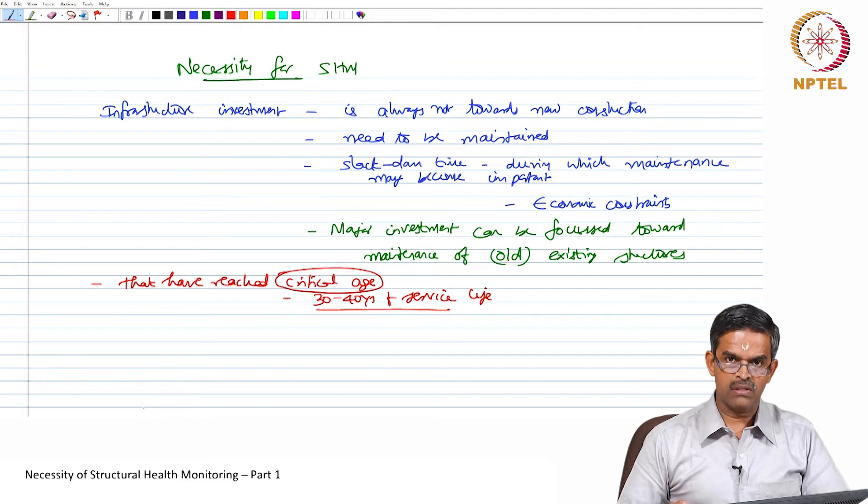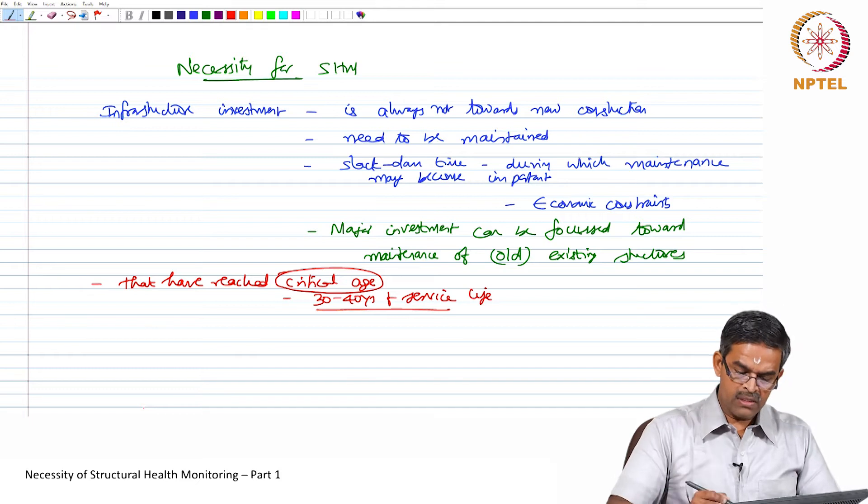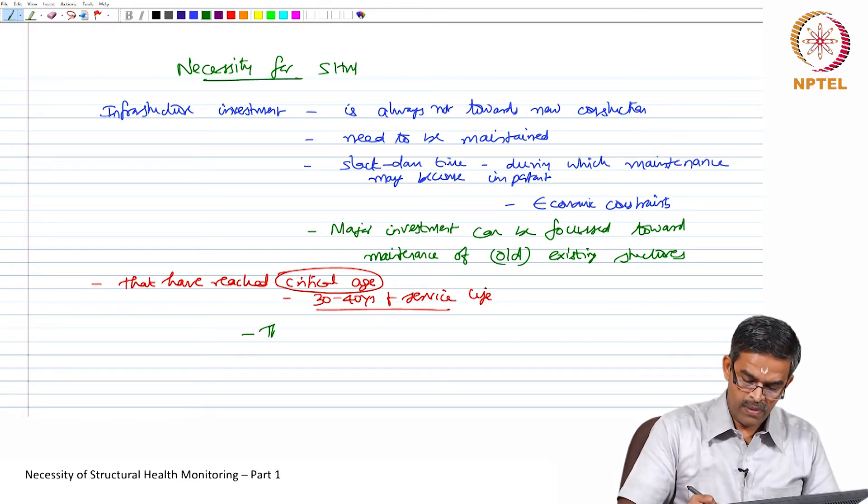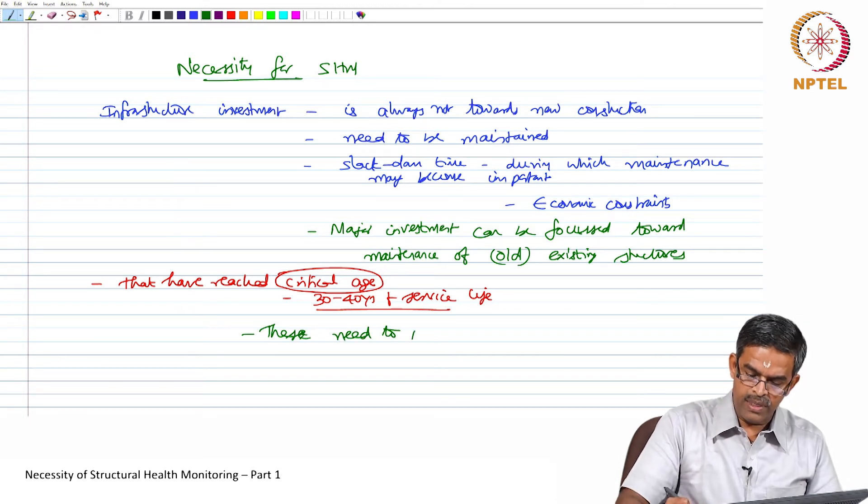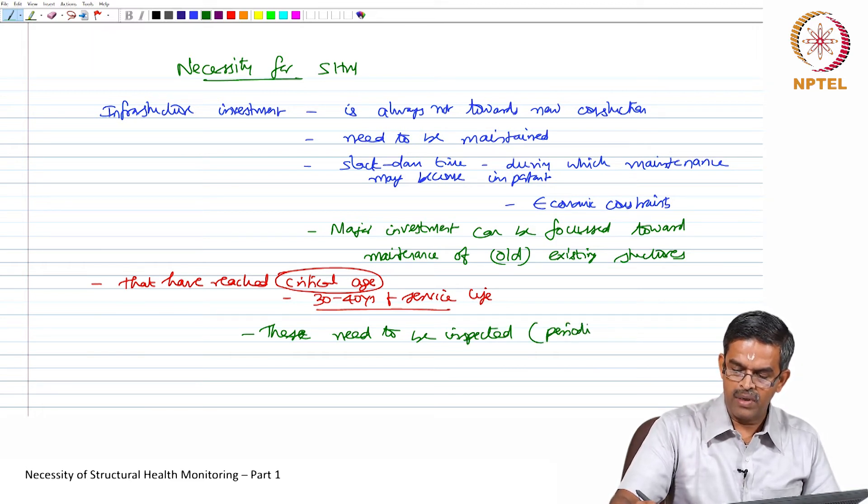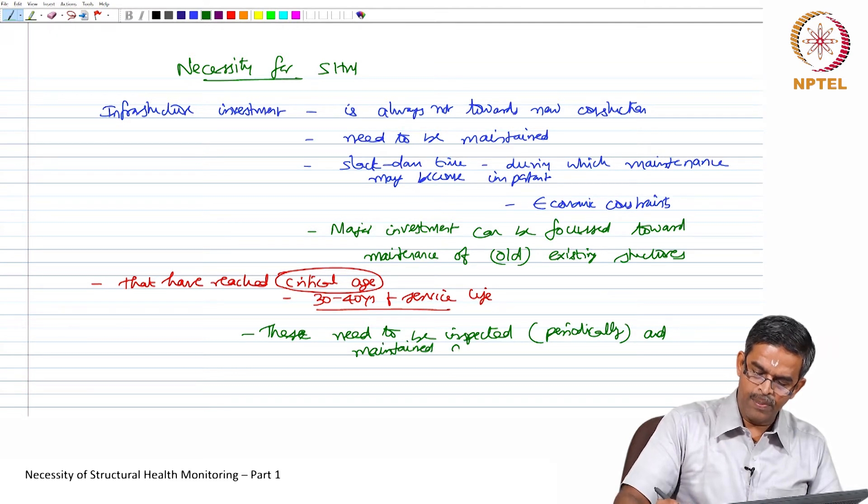There are many factors which dictate whether the structure will be of a critical age. However, in general practice, if the structure is about 30 to 40 years of its served life, those structures come under the bracket of critical age. These structures need to be inspected periodically and maintained appropriately.